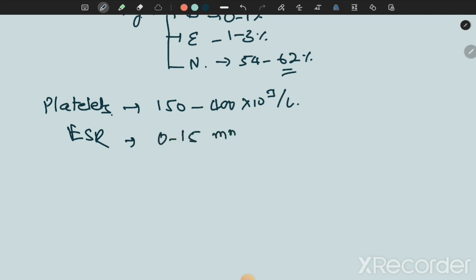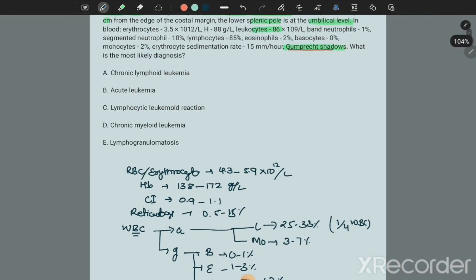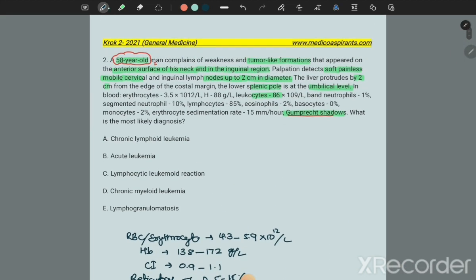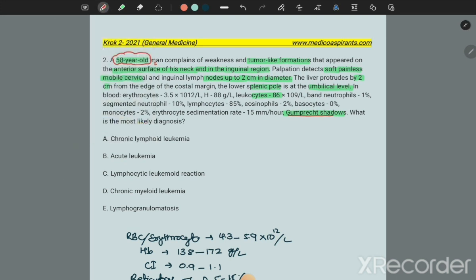Coming back to the question, correlating the values, you can easily see that RBC is down, hemoglobin is down, leukocytes are extremely high, band neutrophils normal, segmented neutrophils normal, lymphocytes extremely high, monocytes normal.